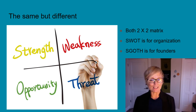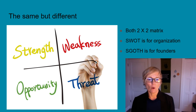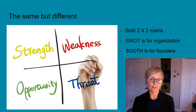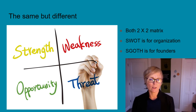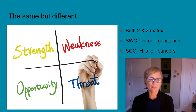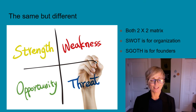The SWOT is something that is generally used for an organization when they are looking for advantages and disadvantages both internal and external to the organization. The top two boxes are strengths and weaknesses — internal to the organization — and the bottom two boxes, opportunities and threats, are things that are external to the organization. The SCOTH is something that is more for founders rather than just whole organizations.